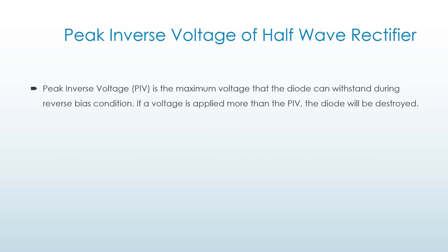Peak inverse voltage of a half wave rectifier is the maximum voltage that the diode can withstand during the reverse bias condition. If a voltage is applied more than the PIV — peak inverse voltage — the diode will be destroyed.